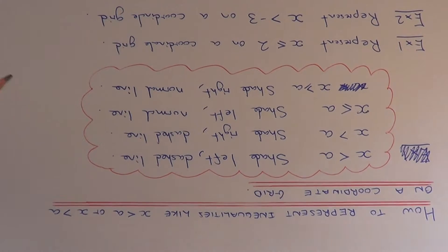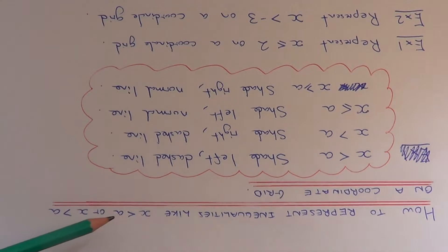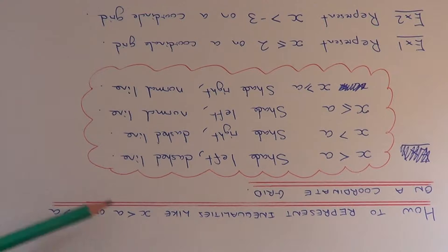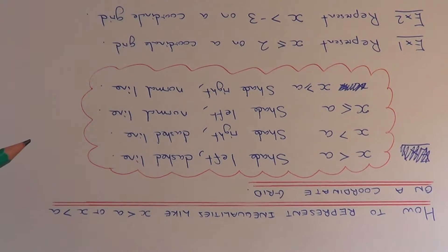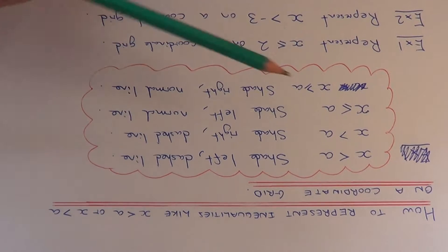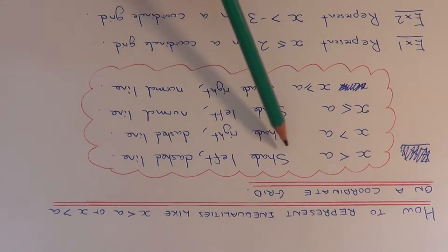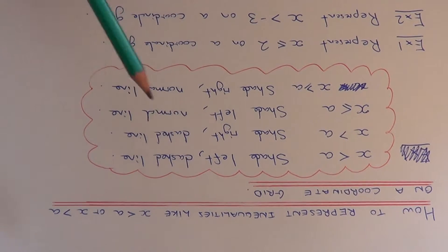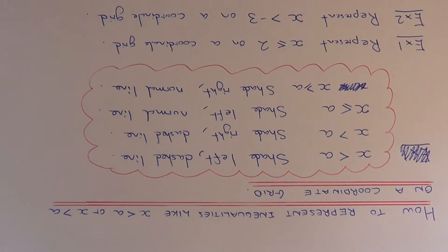Today I want to show you how to represent inequalities which take the form x is less than a or x is more than a on a coordinate grid. First of all you need to know what types of line you need to draw and whether you shade to the left or to the right.